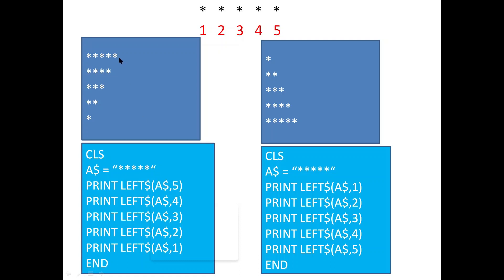Next we want only four characters from the left-hand side, so: LEFT$(a$, 4). Then three characters: LEFT$(a$, 3). Then two: LEFT$(a$, 2). Then last, only one character: LEFT$(a$, 1). This is done without a for loop. You can see the numbers go five, four, three, two, one — so we can use a for loop for this.